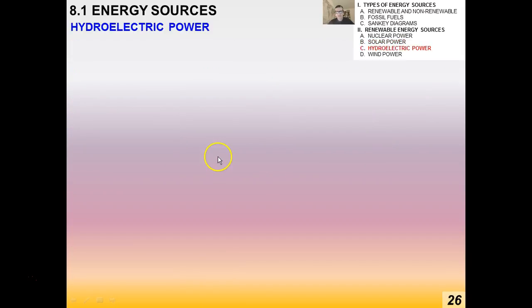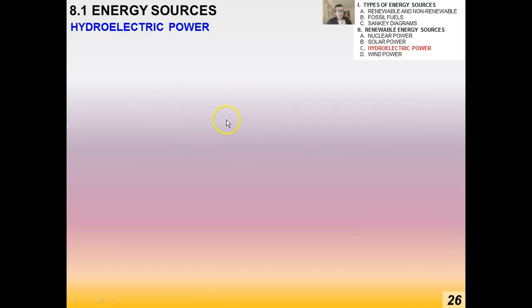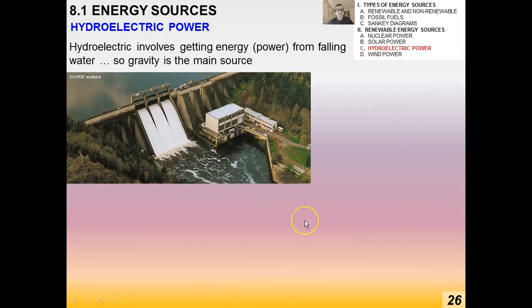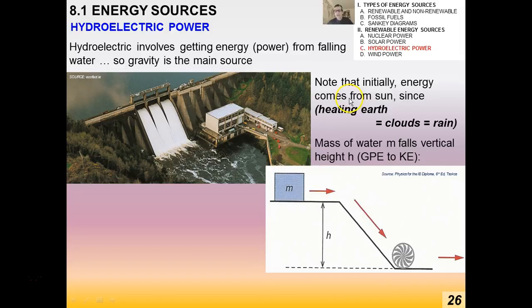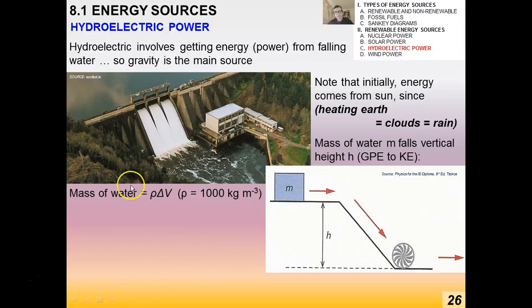Hydroelectric power involves getting energy from falling water, with gravity as the main source. Initially, all this energy comes from the sun — sunlight heats the earth, causes clouds, which produce rain. For a mass of water falling a vertical height, there's a conversion of potential energy to kinetic energy. The mass equals the density of water times the volume, where water density is about 1000 kg/m³.